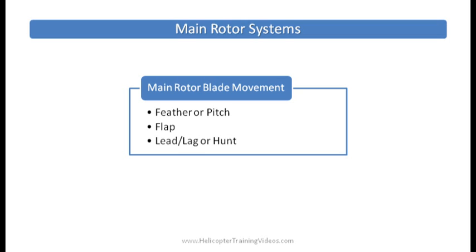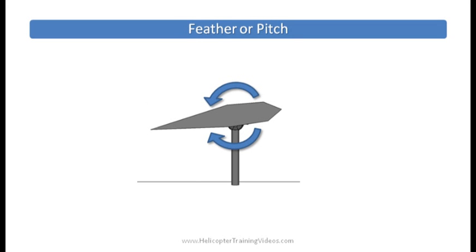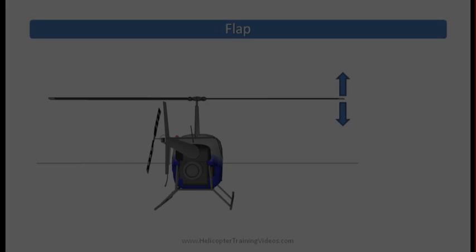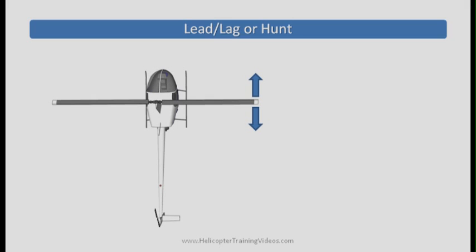They can move in three main ways. They can twist or pitch, or feather as it's known as. They can also move up and down in a flapping motion. And they can also seek forward and backwards along the tip plane in what's known as lead lag or hunting.